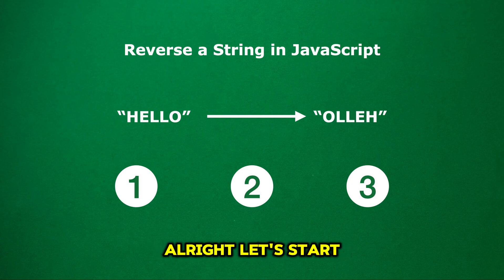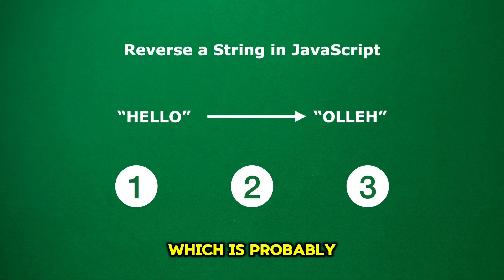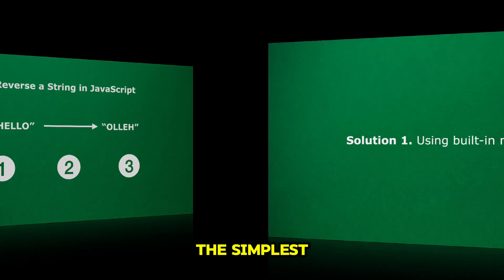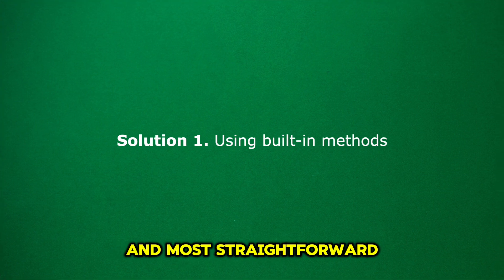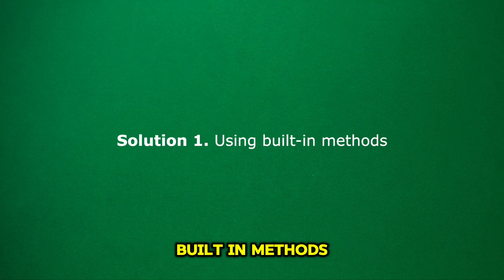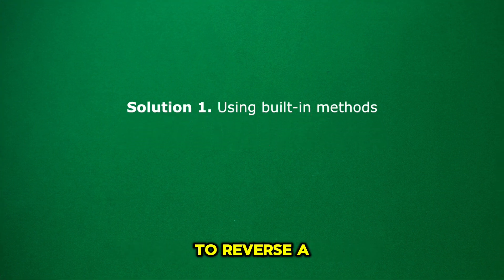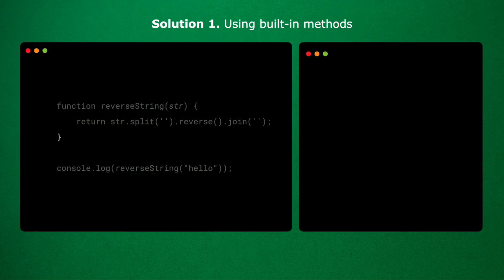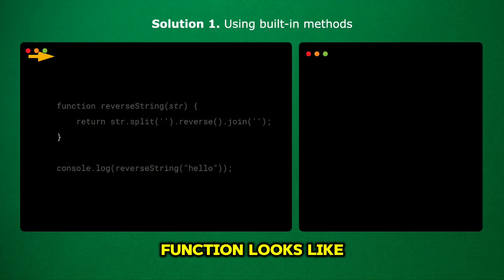Let's start with the first method, which is probably the simplest and most straightforward. We're going to use a combination of JavaScript's built-in methods to reverse a string. Here's what our function looks like.